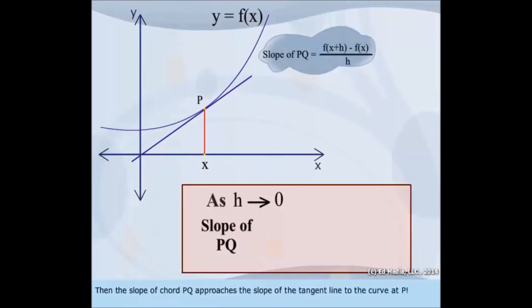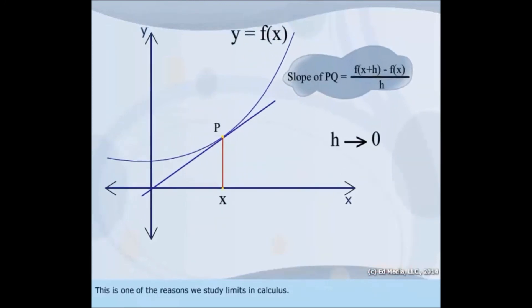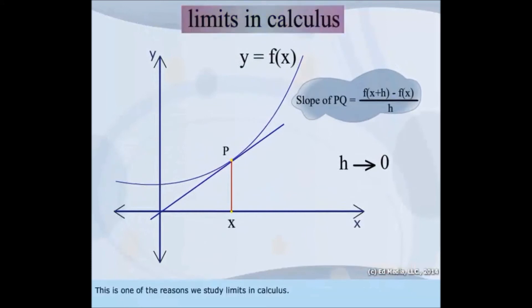Then, the slope of chord PQ approaches the slope of the tangent line to the curve at P. This is one of the reasons we study limits in calculus.